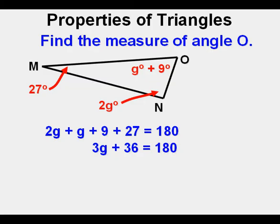This becomes minus 36 when we move it over to the other side of the equal sign. So we have 3G equals 144. 144 divided by 3 is 48, so G equals 48.